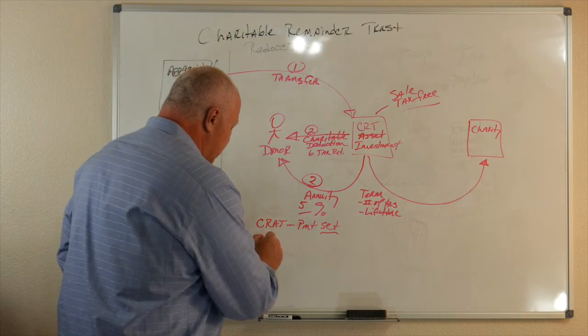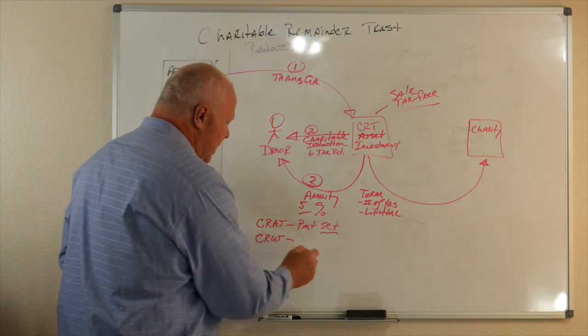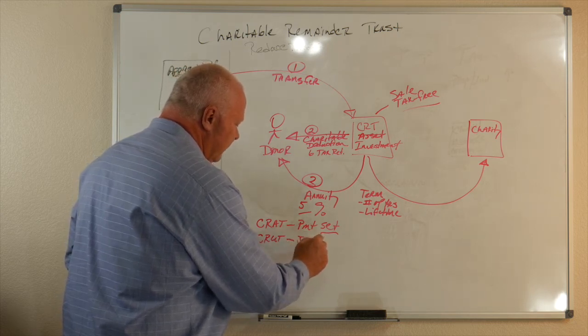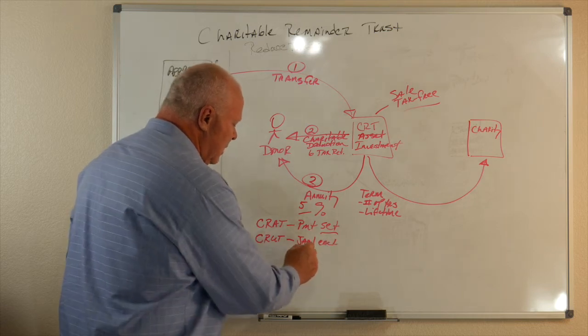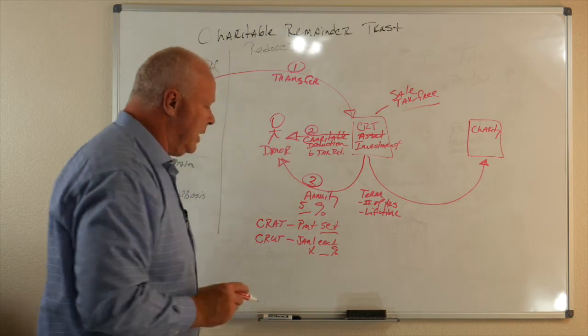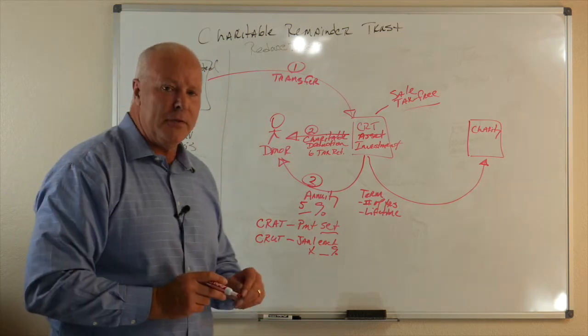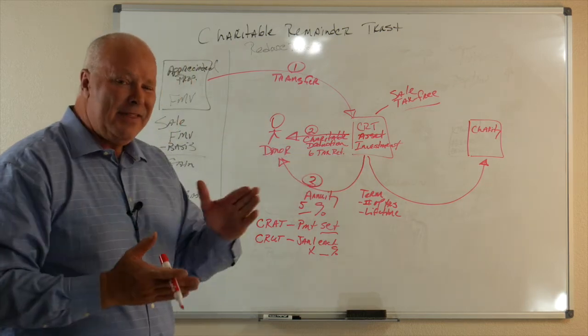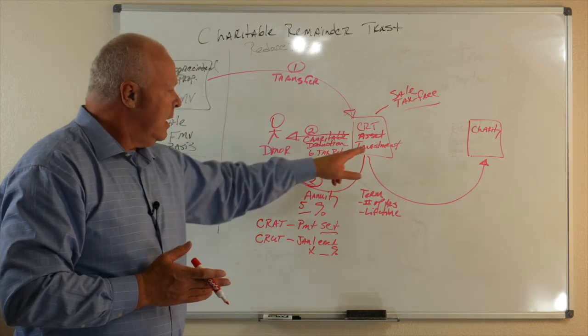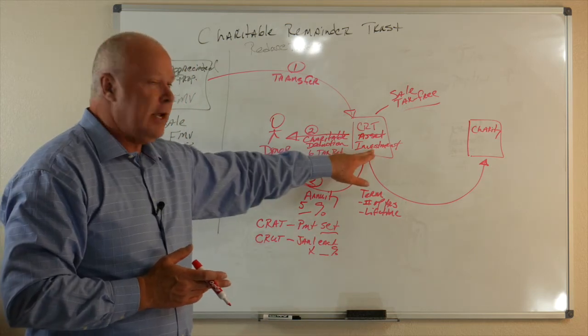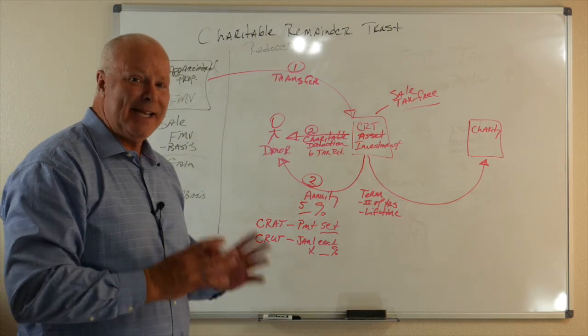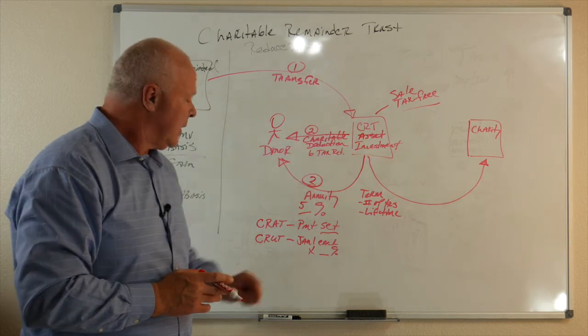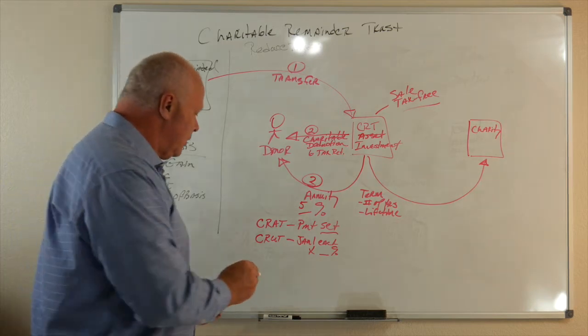If I set up what's called a charitable remainder unit trust, now my 5% is the January 1 value each year times my 5% or whatever it is. Now, why would I do that? Well, if I'm managing this investment or having it managed, and I think I can grow that investment over time, then this is going to be 5% of an increasing number. If I want to just set it and forget it, I want 5% of what I invested here, what I transferred in.